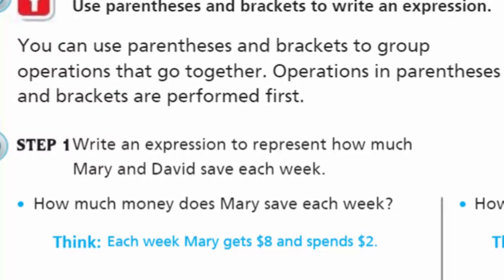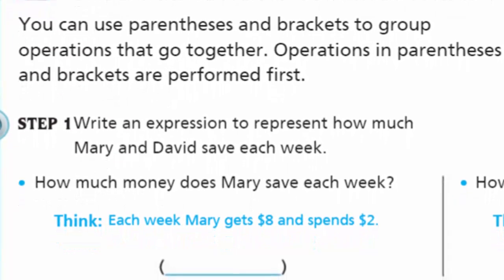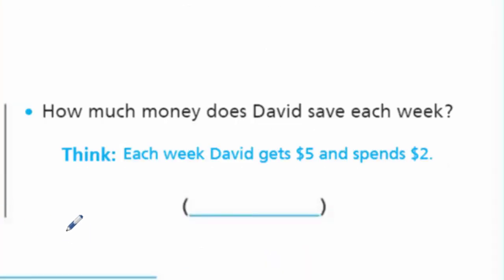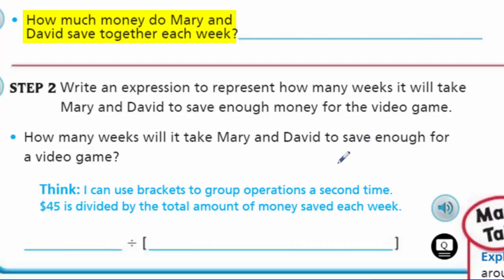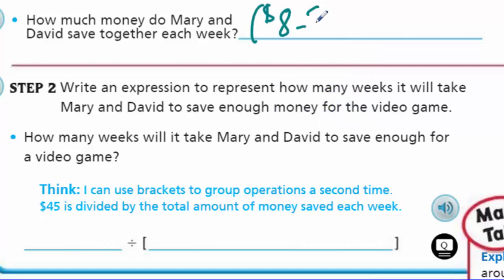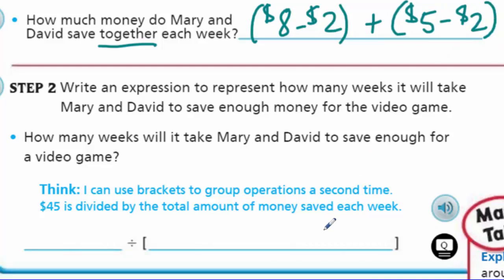Step one: write an expression to represent how much Mary and David save each week. Each week Mary gets eight dollars and spends two dollars, so that's (8 - 2). Each week David gets five dollars and spends two dollars, so that's (5 - 2). Together they save (8 - 2) + (5 - 2) per week.